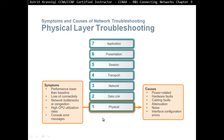For physical layer troubleshooting, when we use a bottom-up approach we start at the physical layer. Symptoms include performance lower than the baseline, lack of connectivity — for example no lights on the device — network bottleneck or congestion, high CPU utilization rates, and console error messages. Causes could be power-related, such as the device not being powered on or a blown fuse, hardware faults, cabling faults, attenuation, noise, or interface configuration errors.